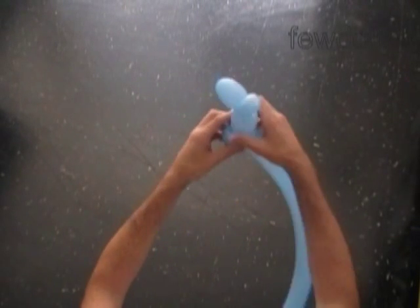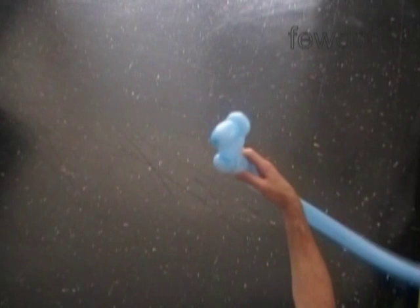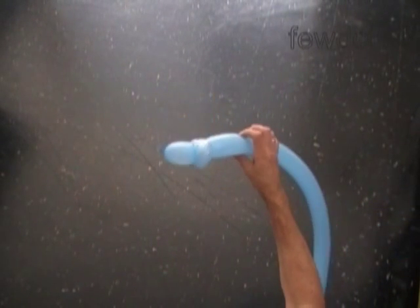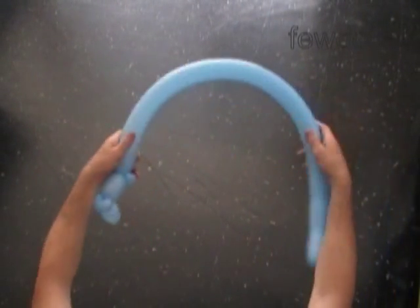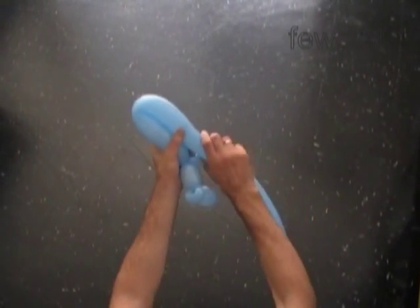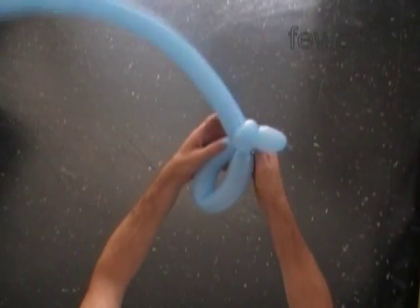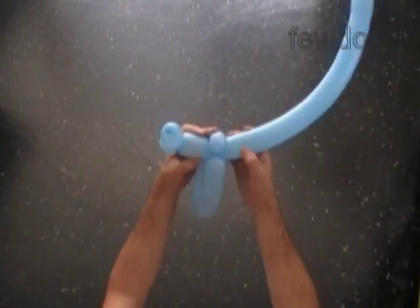The next bubble we twist about one third length of the rest of the balloon. It is very approximate estimation. Let's twist the fifth about fifteen, maybe thirteen inch long bubble. Lock both ends of the fifth bubble in one lock twist. The rest of the balloon is the sixth bubble.